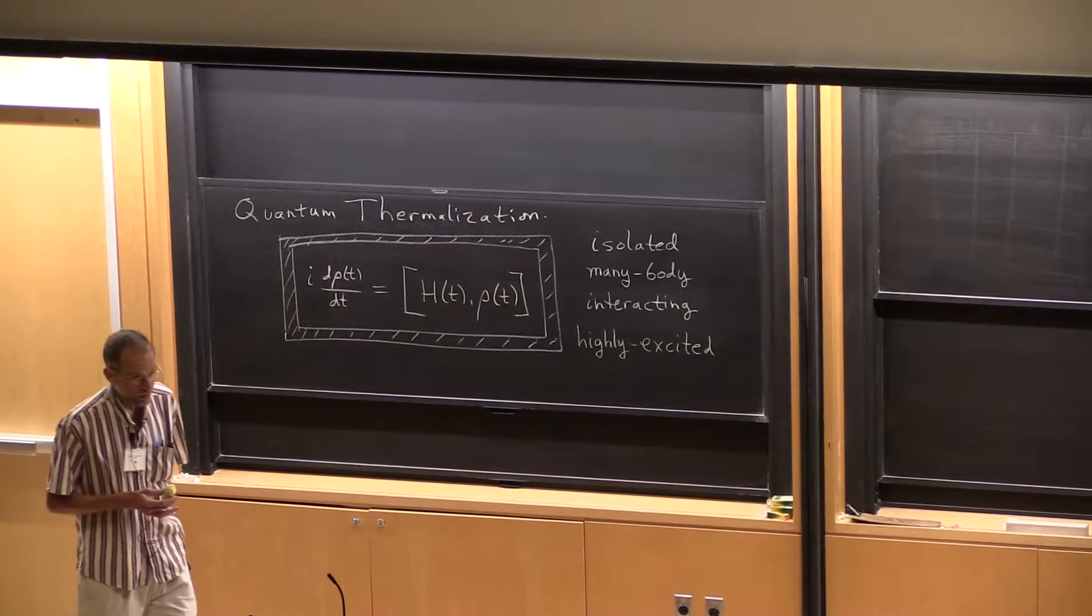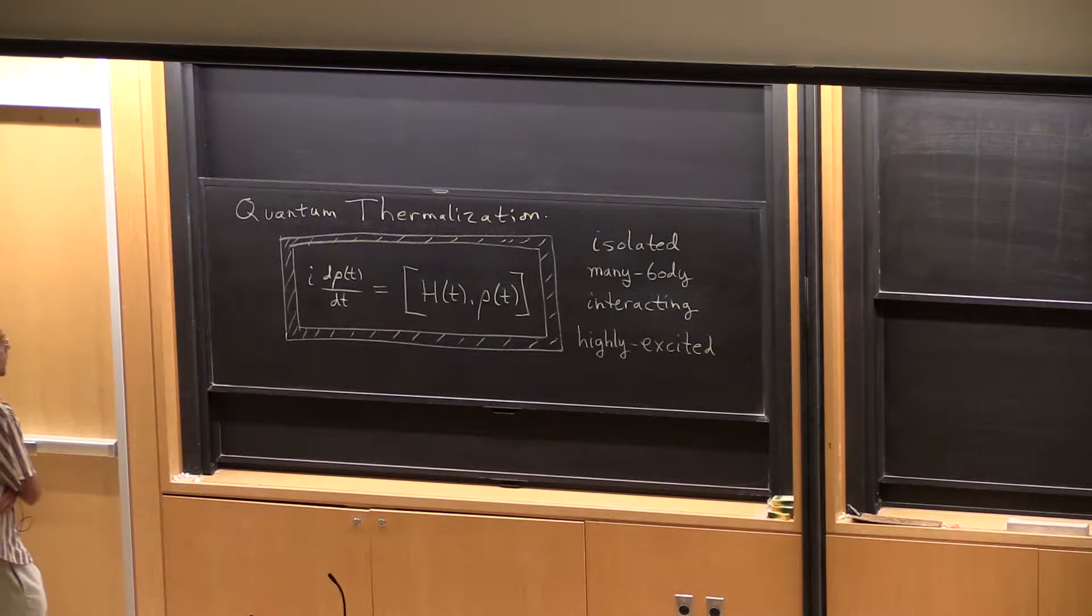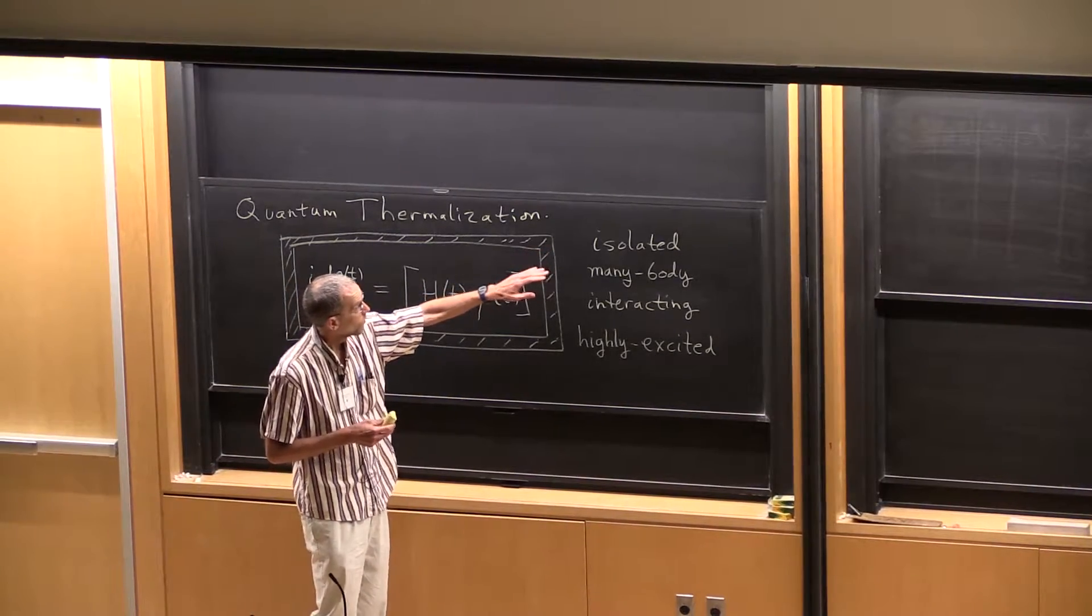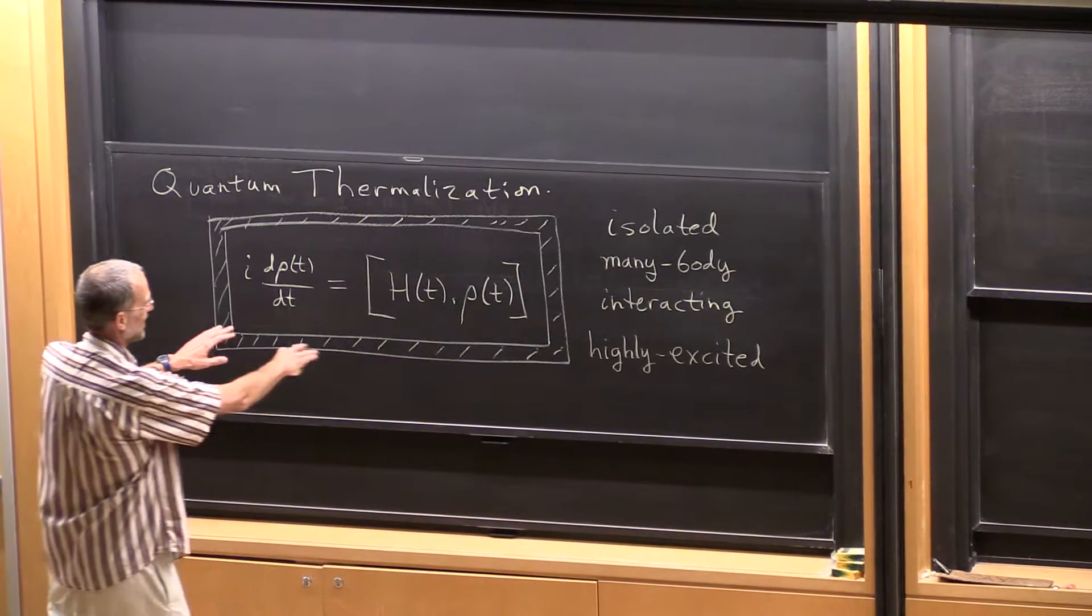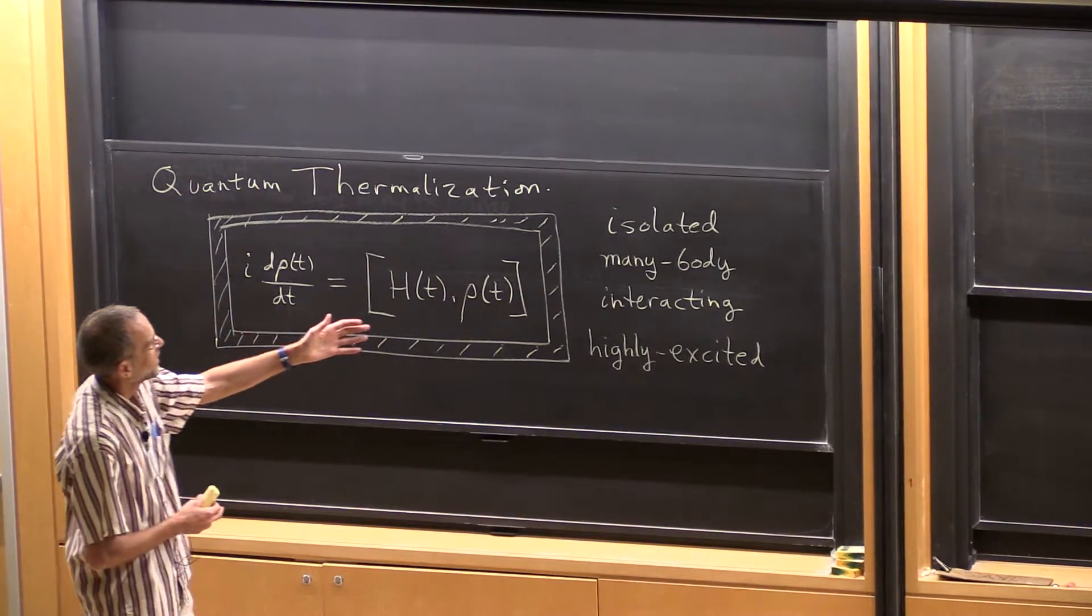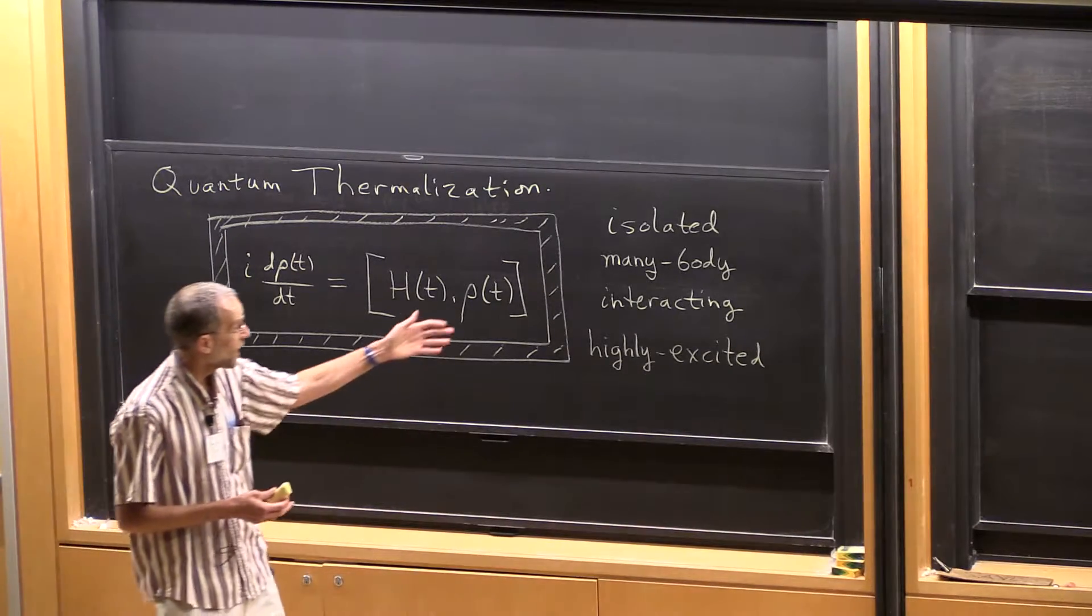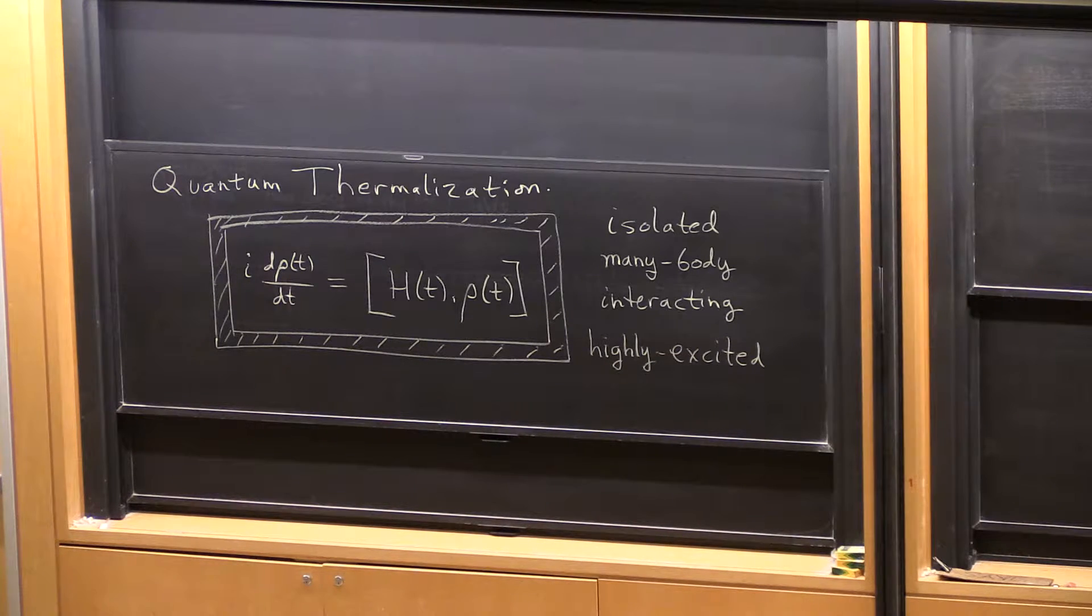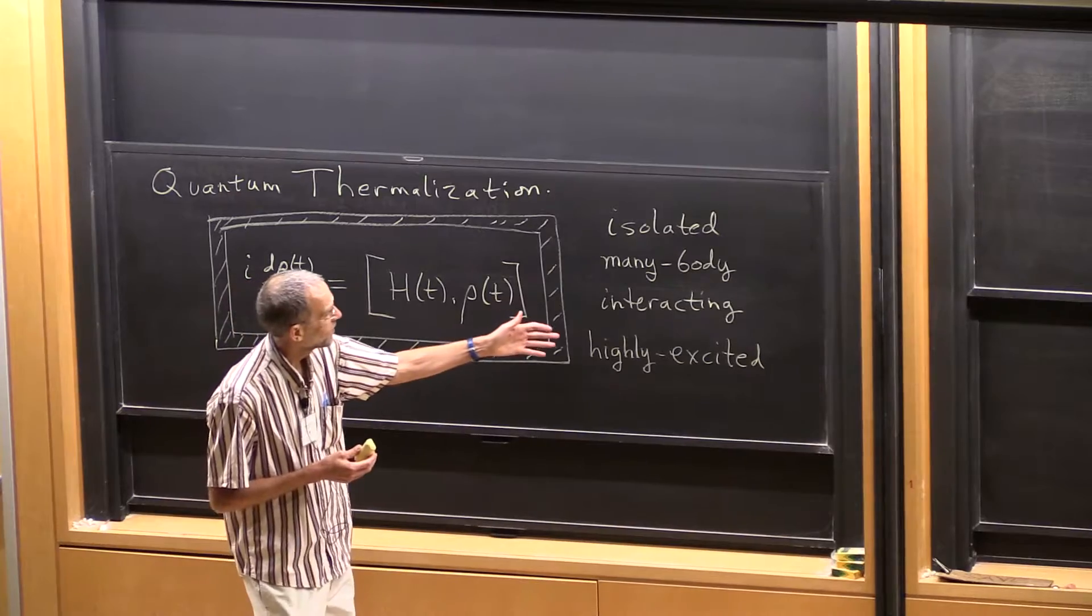These are very fundamental questions and concepts in quantum statistical mechanics. The system we want to think about is an isolated, meaning isolated from the environment, so it's not coupled to anything outside of this box. It's many-body, so inside of this we have a many-body quantum system interacting. It's not a special quantum system with some fine-tuned properties. I want something that's a generic interacting system.